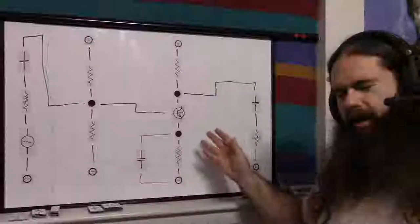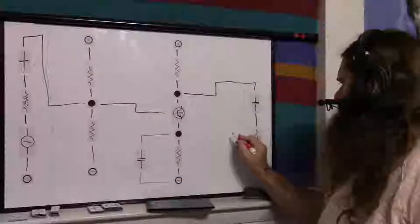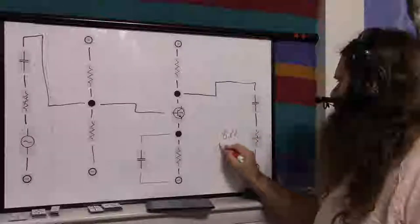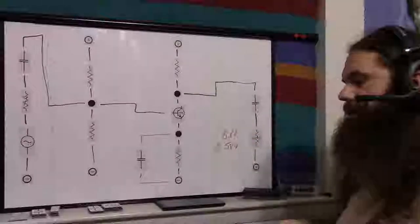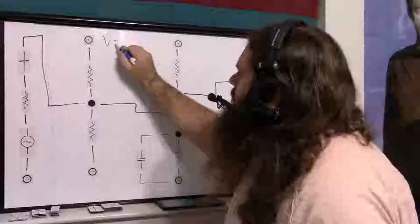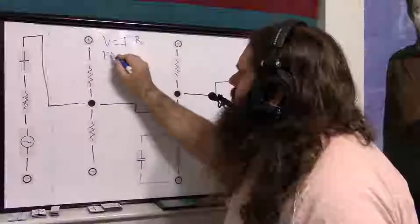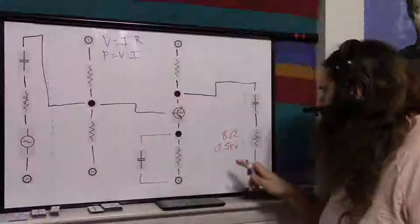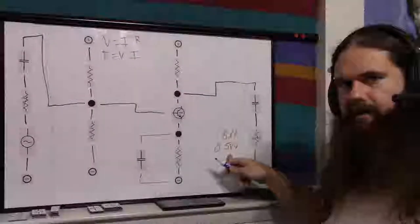That's more the maximum rating than a goal. So the first thing you want to do is think about your load. Like I said, 8 ohms. In fact, I'll write it down. The load is an impedance of 8 ohms and 0.5 watts. So we have our standard equations. V equals I times R, and P equals V times I.